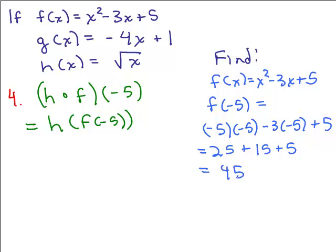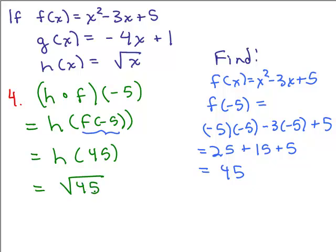So in place of f of negative 5 we plug in 45, giving us h of 45. Now h of x is the square root of x, so we want the square root of 45. That's not simplified because 45 has a factor of 9, which is a perfect square. So the square root of 9 times 5 lets us take out a 3, giving a final answer of 3 square roots of 5.